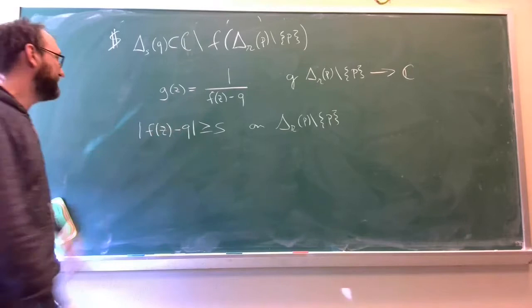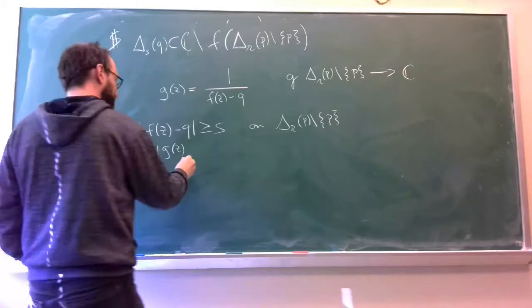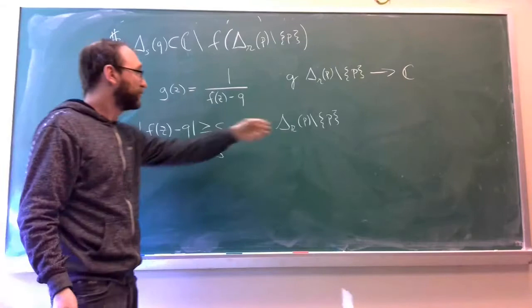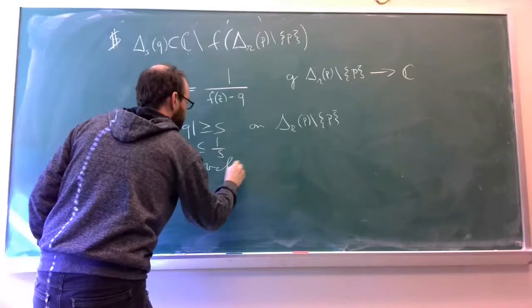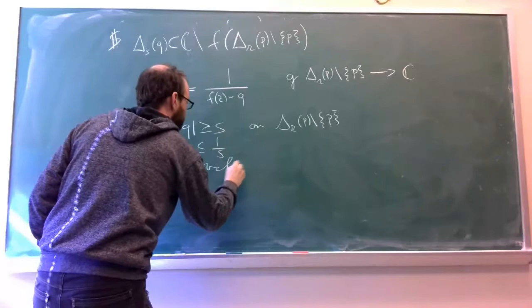Well, what does this mean? This means that |g| is bounded by 1/ε for all z in this disk. So p is a removable singularity of g.